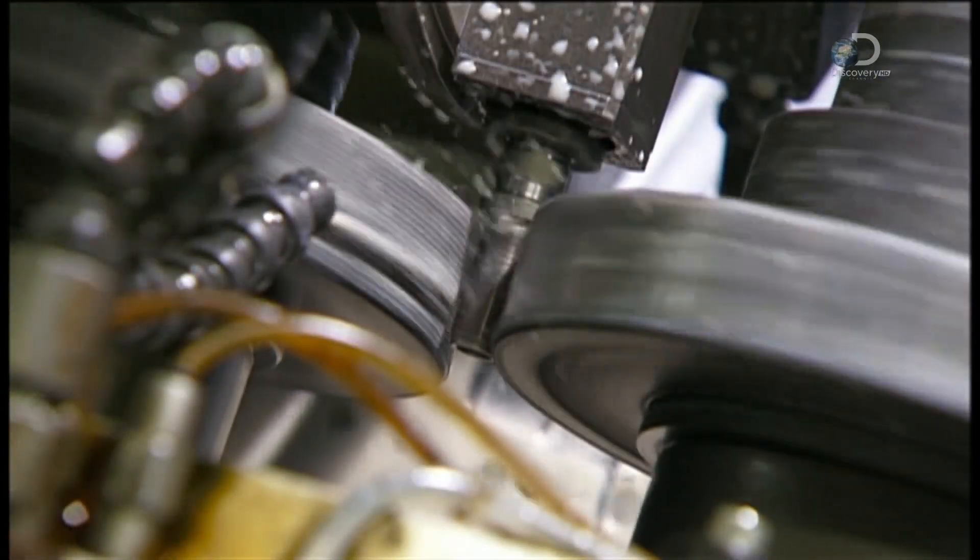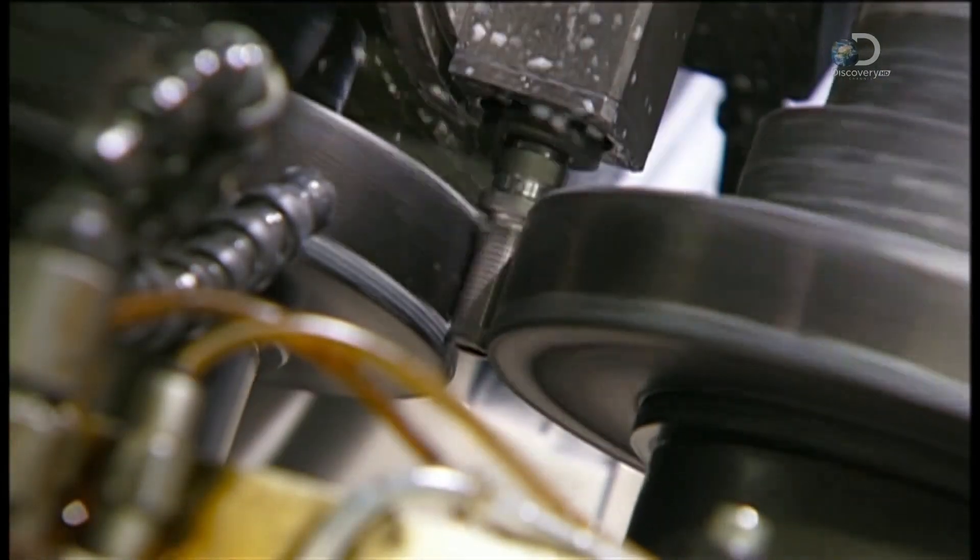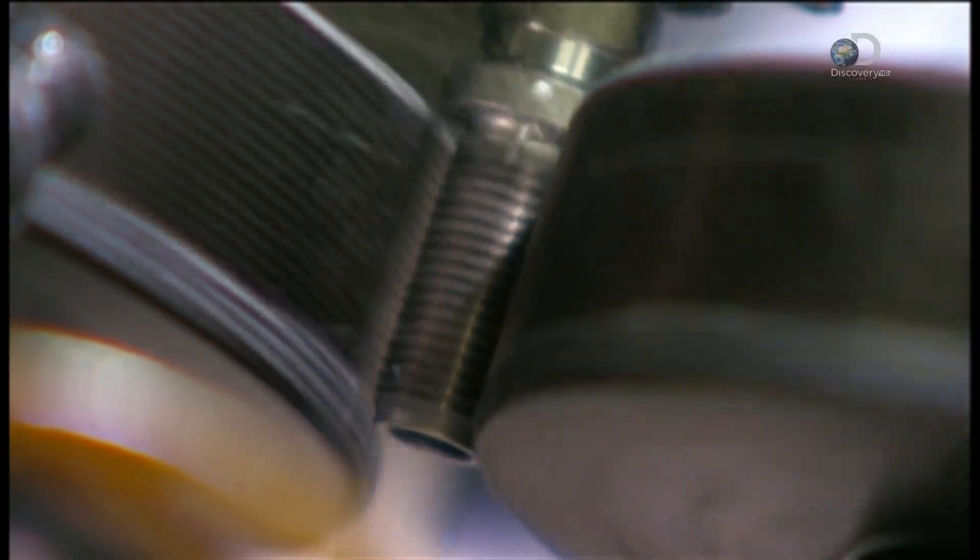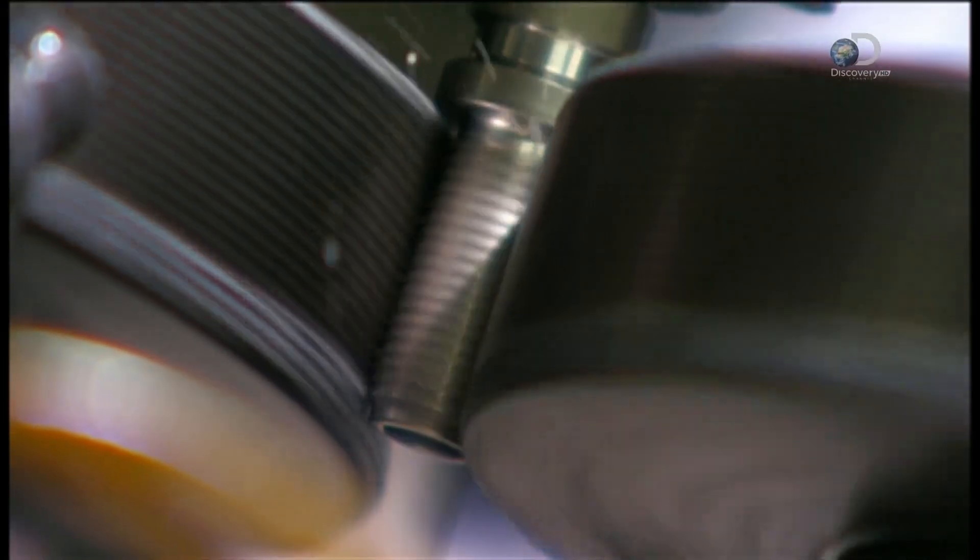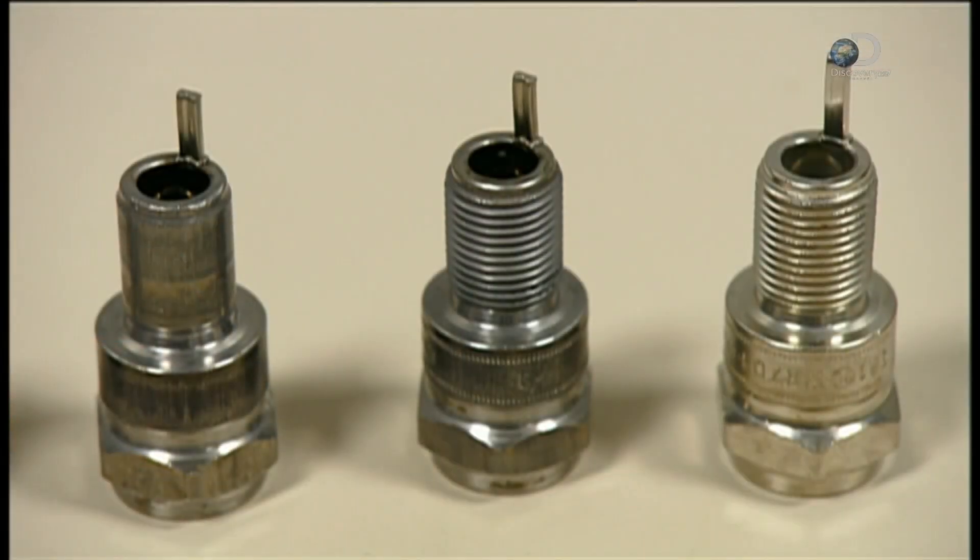Ridged rollers carve threads in the steel shells so they can be screwed into the engine block. The shell then gets a protective, silvery finish.